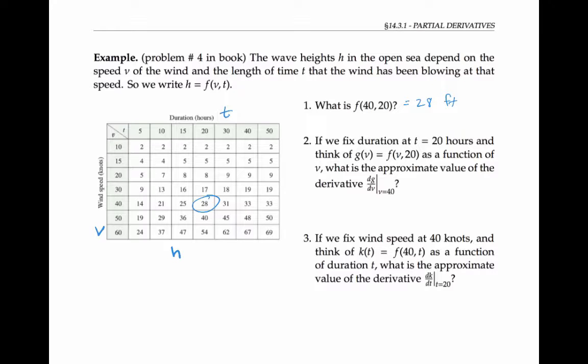Now, if we fix the duration at t equals 20 hours, we can look at f of v, 20 and think of this just as a function of v, we'll call it g of v. So we can ask, what's the approximate value of the derivative dg/dv when v equals 40.